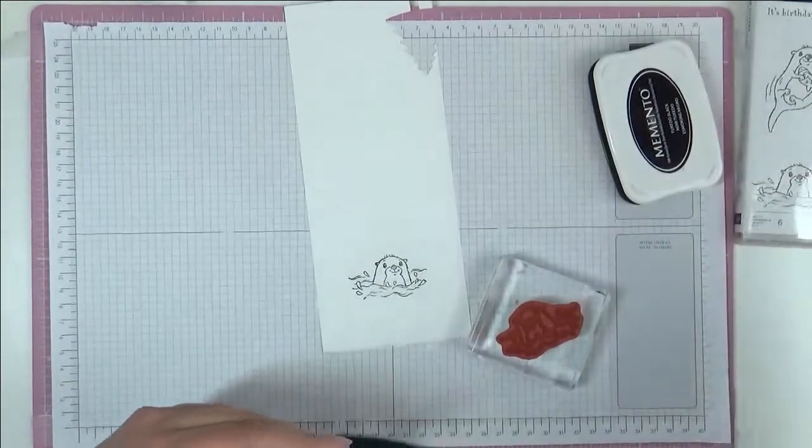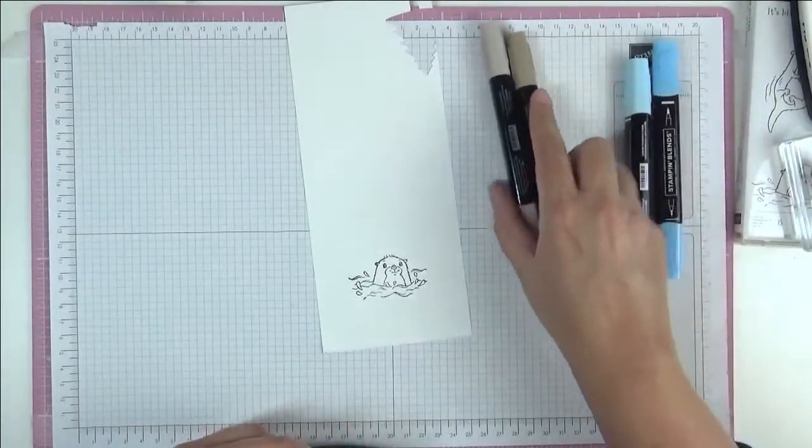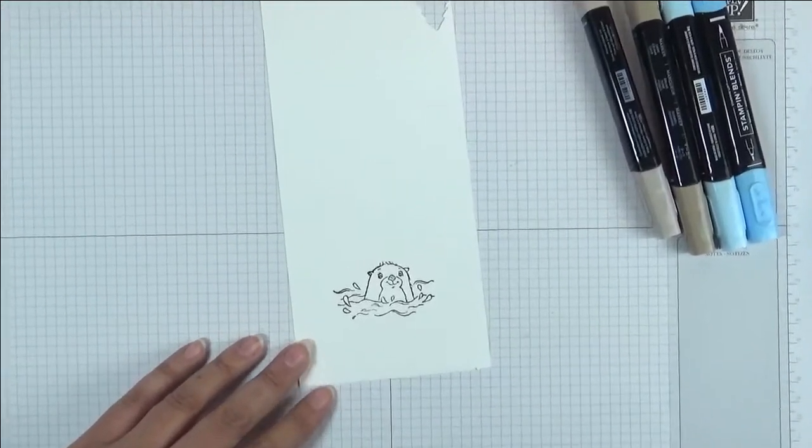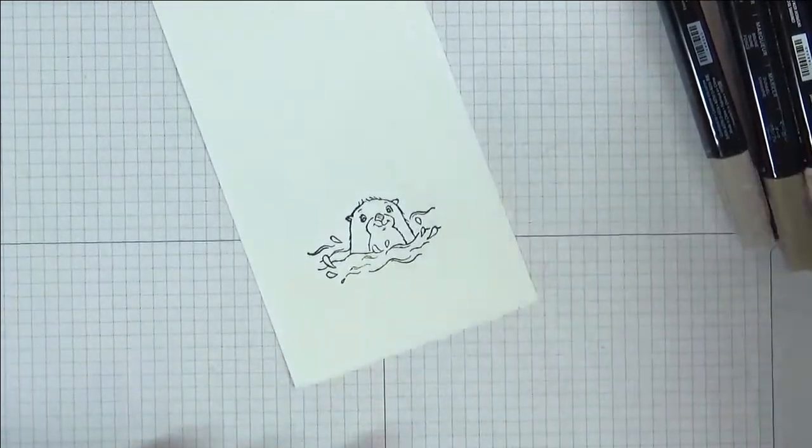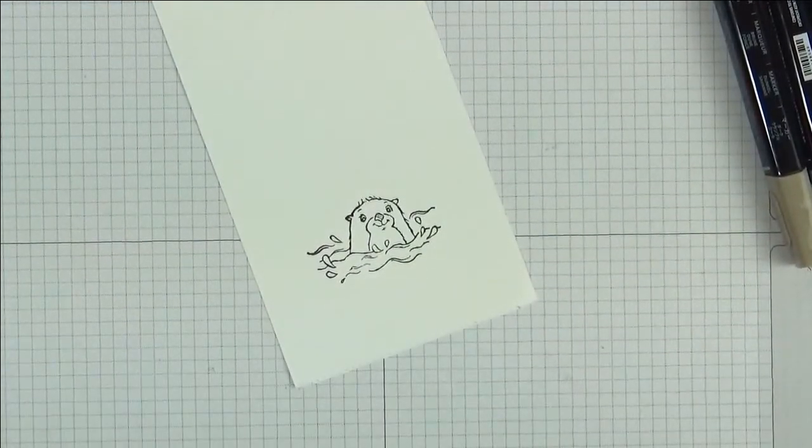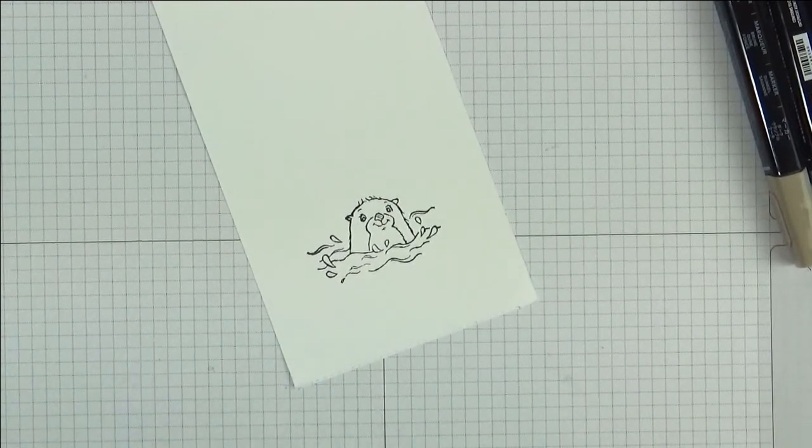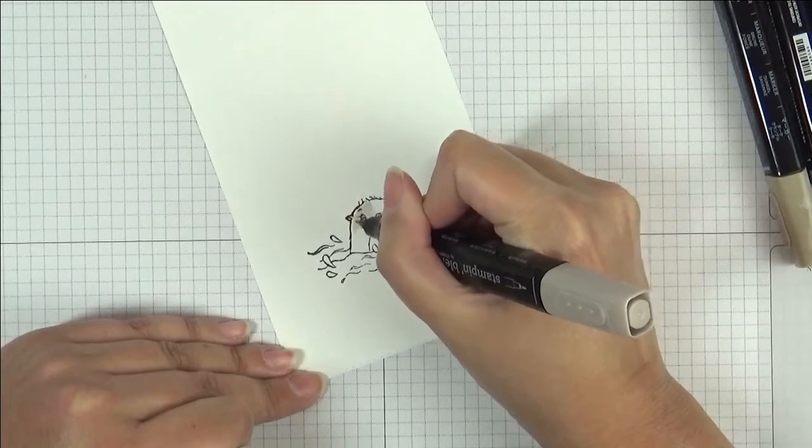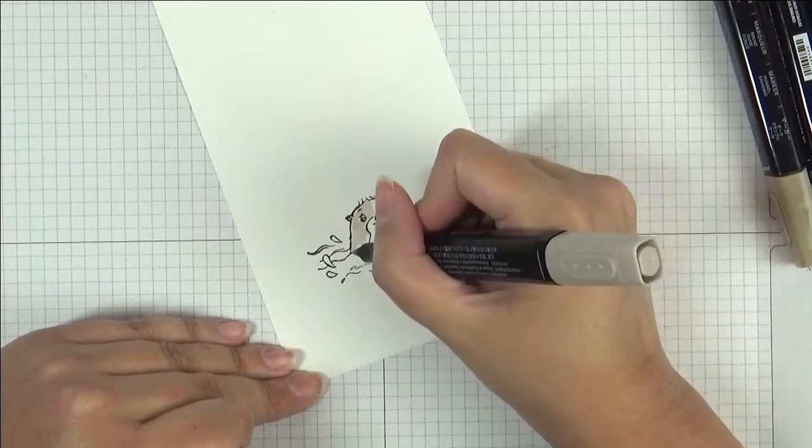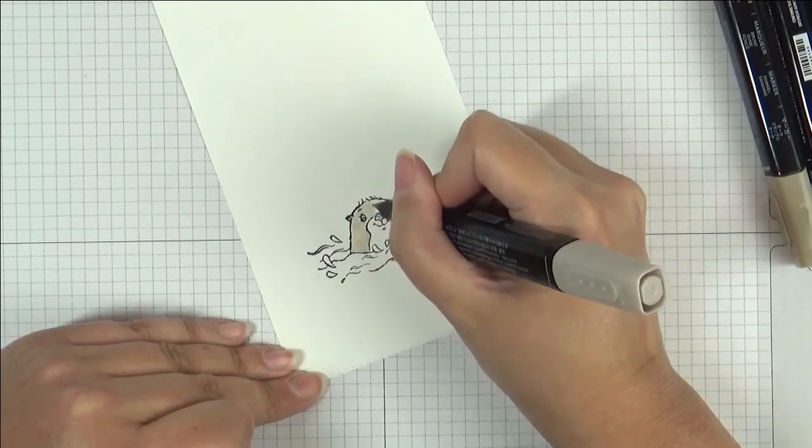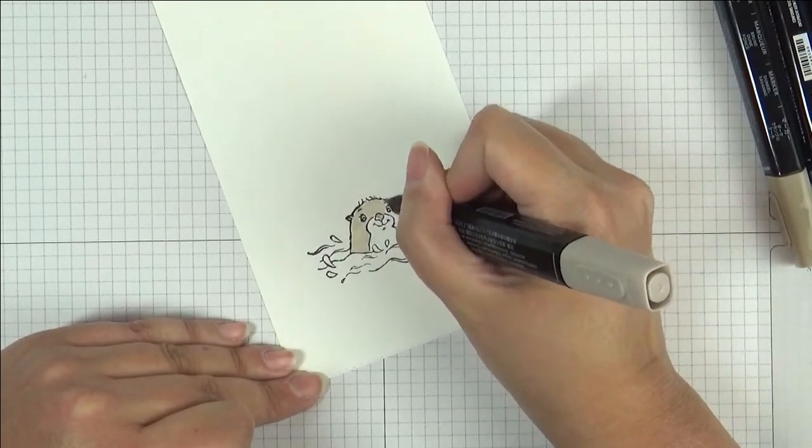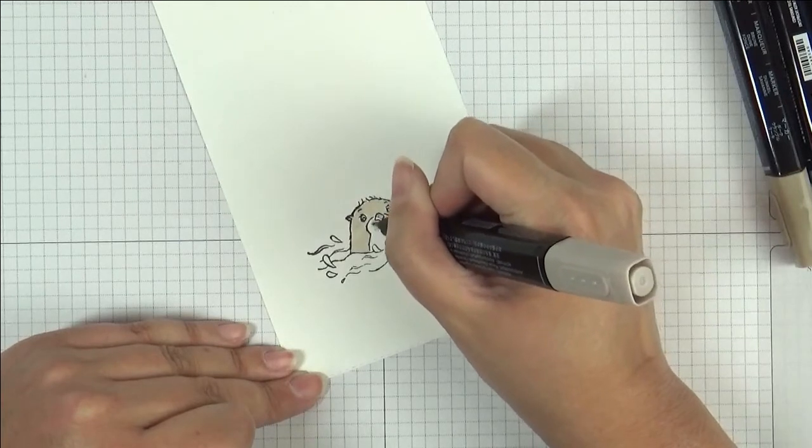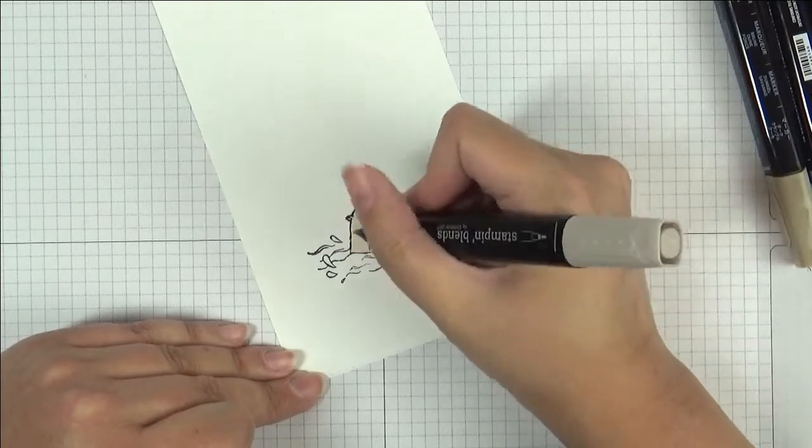I am only going to be using two different colors: crumb cake and balmy blue. Let me just zoom you in so you can see, and we're going to color these together. I'm not going to put you on fast forward like I normally do. We're going to color these together so you can see what I'm doing because it's really quick easy coloring to do. I'm going to use a light crumb cake here to color in this little fella or her. I don't know why I keep saying him. I'm just going to cover all of him or her with this light crumb cake.